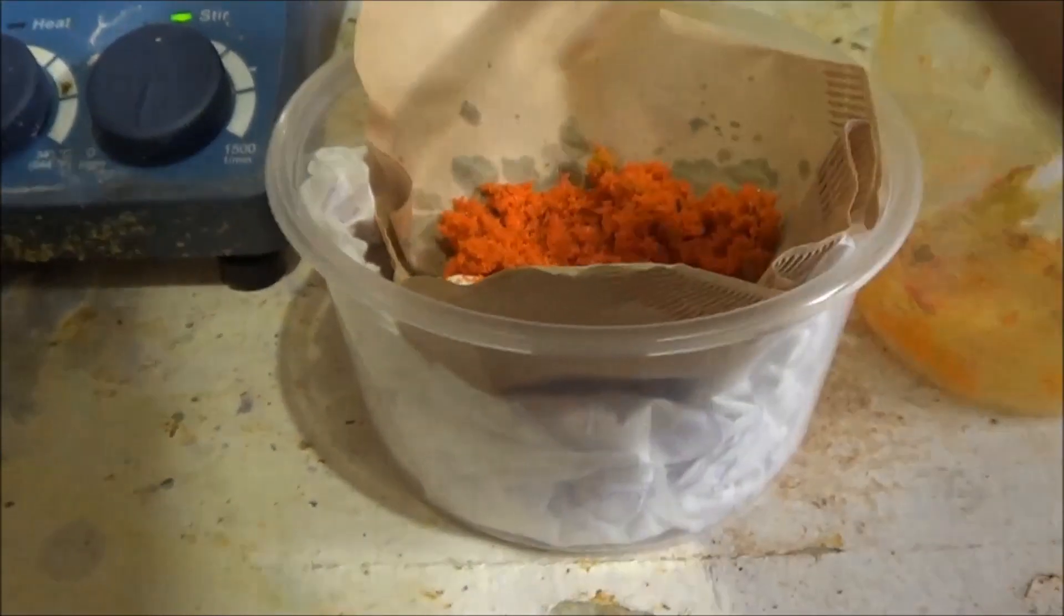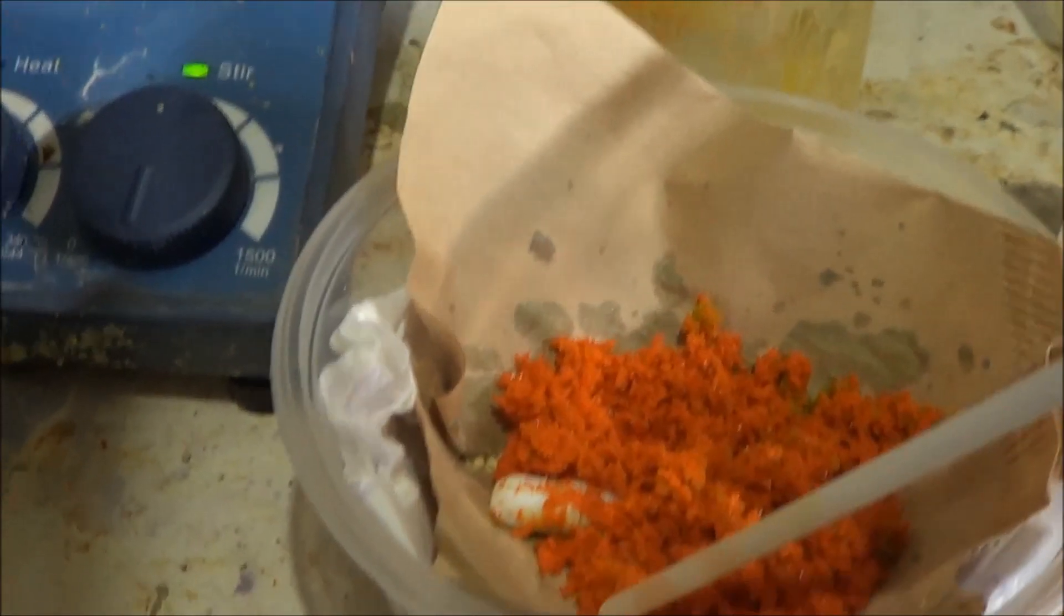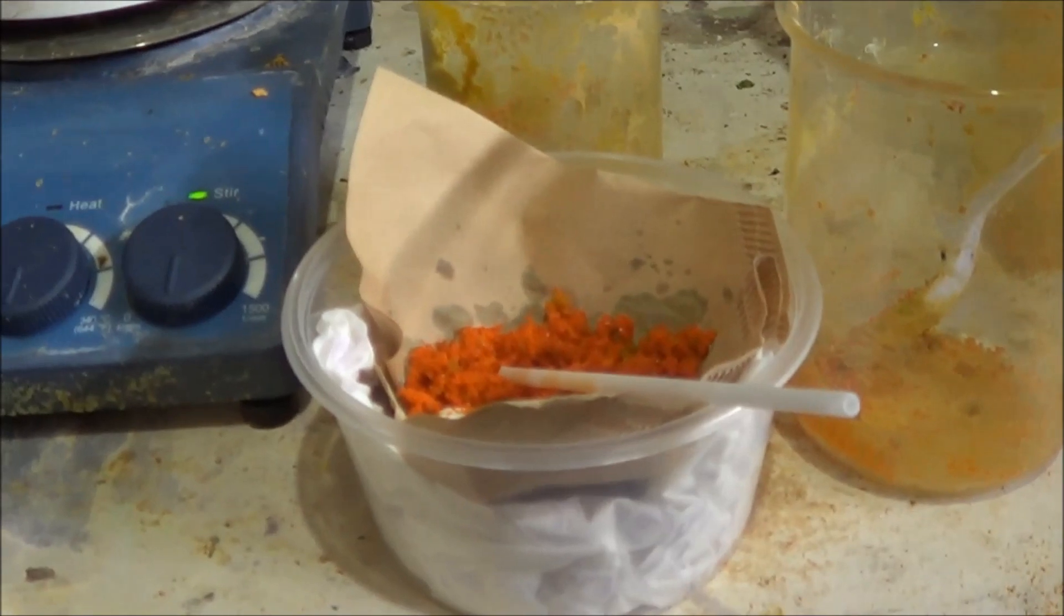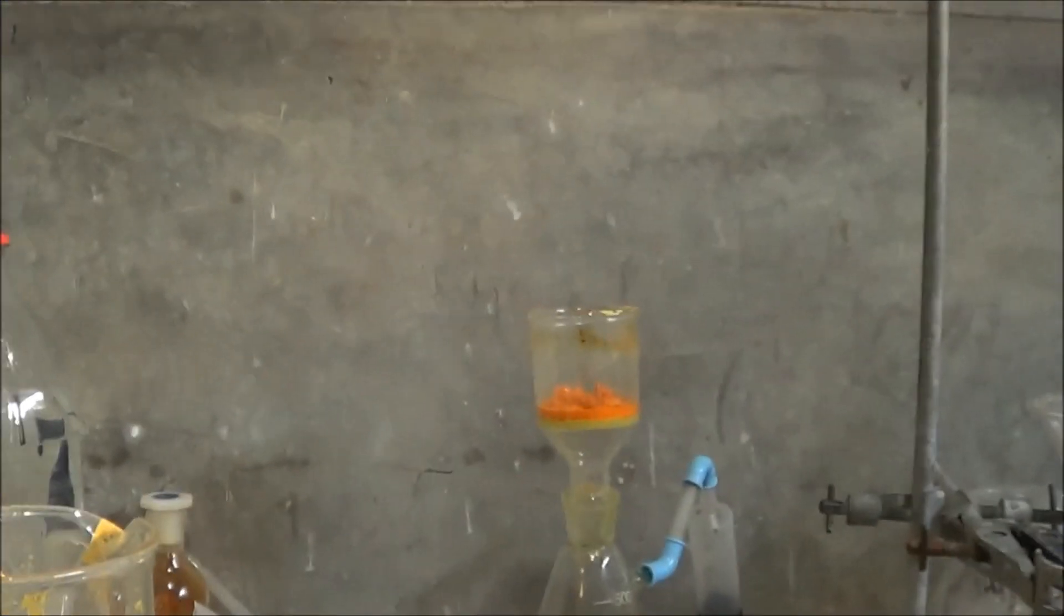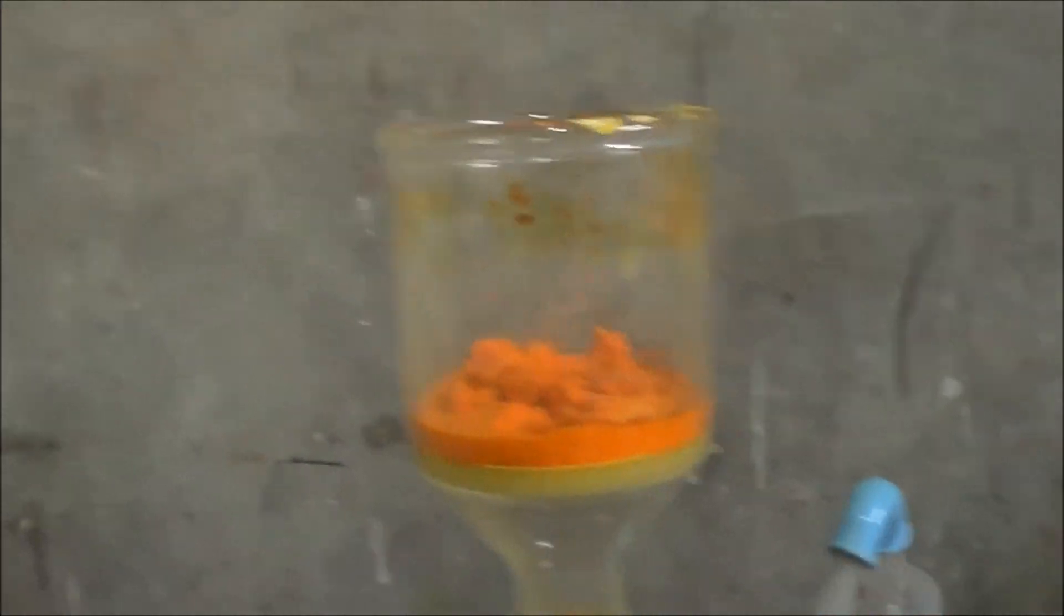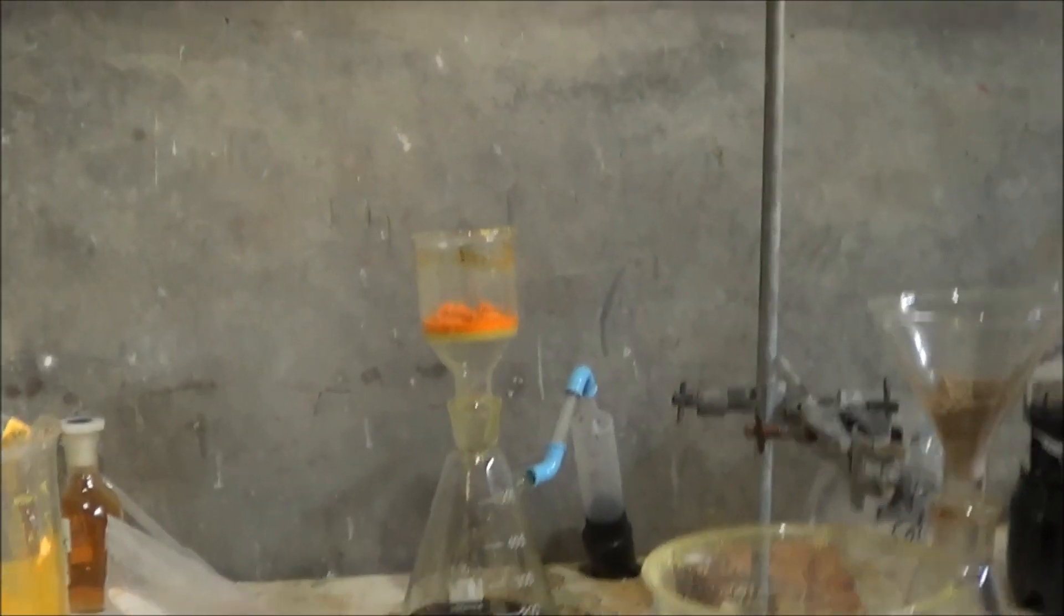And here we have ammonium dichromate crystals, they're quite lovely, actually. So we'll put this outside to dry, which given the fact it's about 45 degrees today, shouldn't be that long. I've also made a little bit more over here from chromium trioxide and ammonia. That was quite fun, actually. I made more just because I want more for the demo that we're gonna do on the other channel, hopefully.